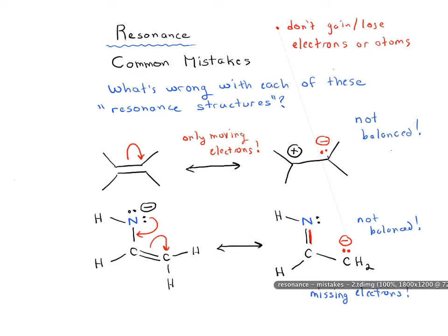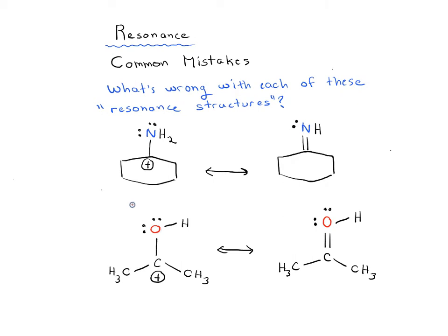Let's look at another example. What's wrong with these resonance structures? There are actually a couple of things wrong. Hopefully you'll see that we've got too many electrons around our nitrogen — there are too many electrons. Notice we've got 10; that's not legal. And the other thing is it's also not balanced: there are two hydrogens on one side and one on the other.